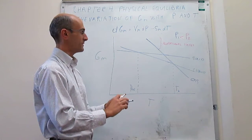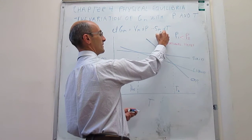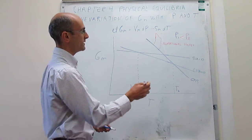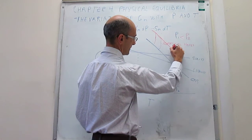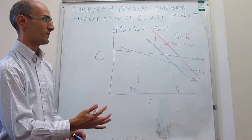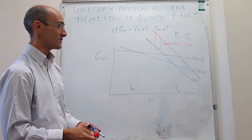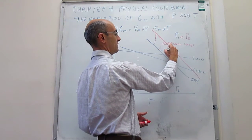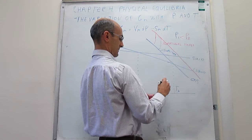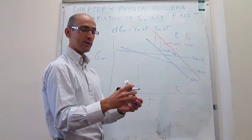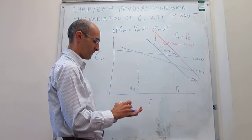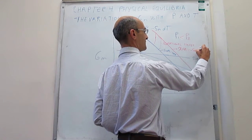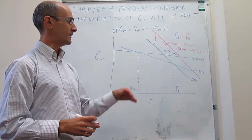You can do this for any single point in the line — each point increases, and eventually you get a new line parallel to the original. Notice that the slope doesn't change: the variation of molar Gibbs energy with temperature should be the same, and in both cases that slope is equal to minus the molar entropy of the gas. The molar entropy of the gas doesn't change much with pressure — that is an approximation we're making — and because we're considering that these pressure changes are not great, that should not change the slope of the line.